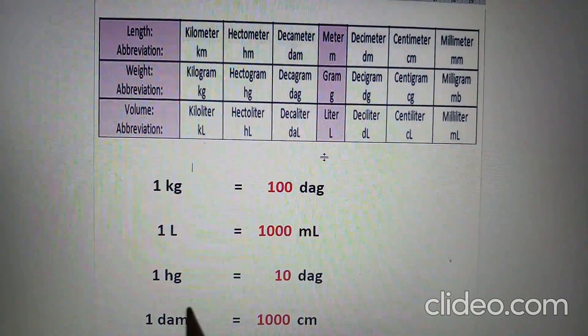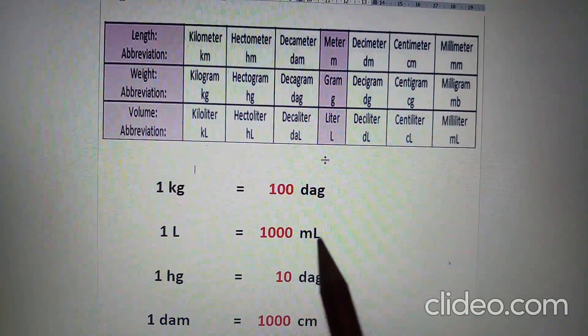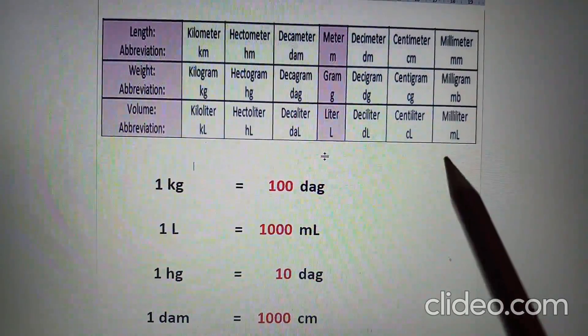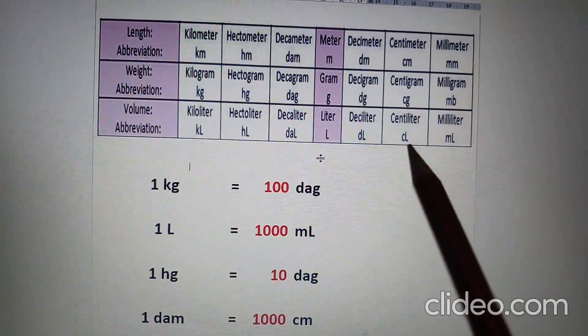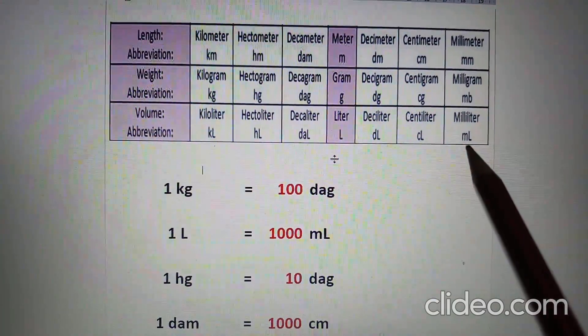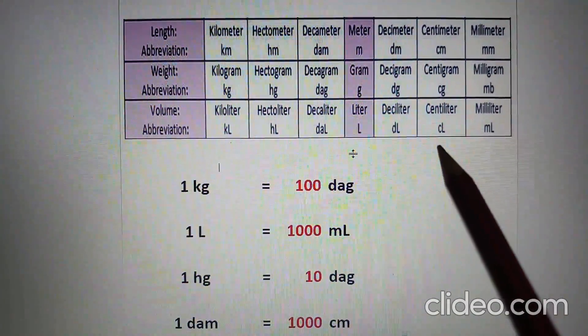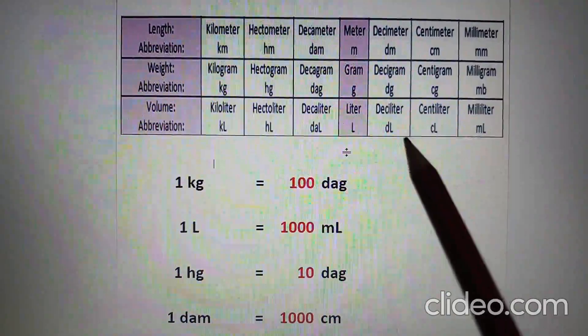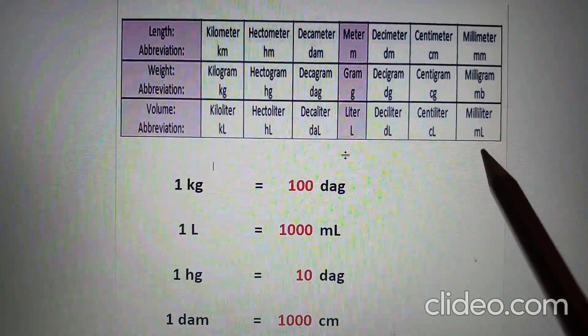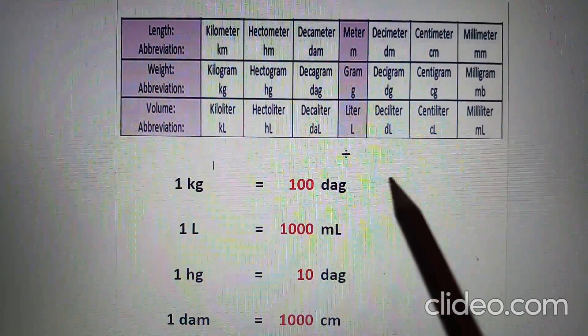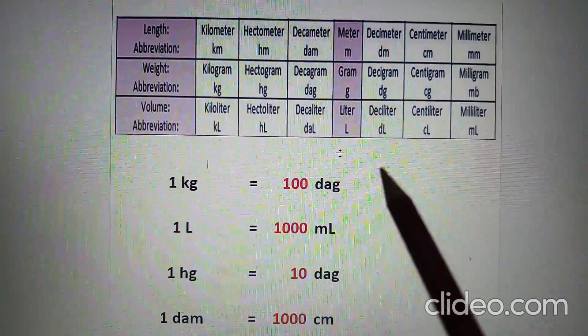1 liter equals how many milliliters? From liter to milliliter, we move three steps to the right—10, 10, and 10. 10 times 10 times 10 equals 1,000. Therefore, there are 1,000 milliliters in 1 liter.